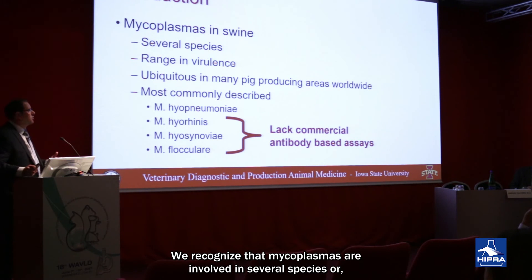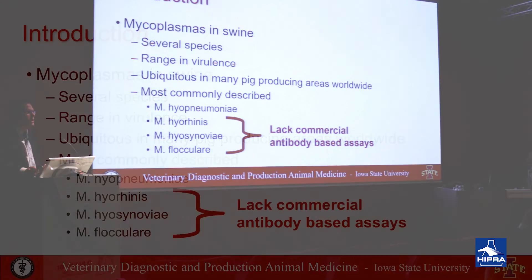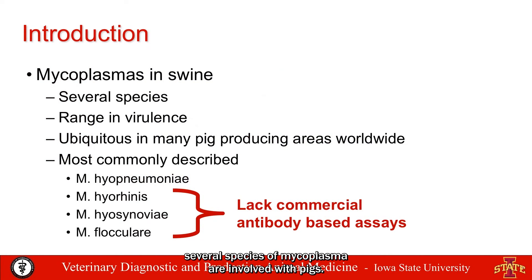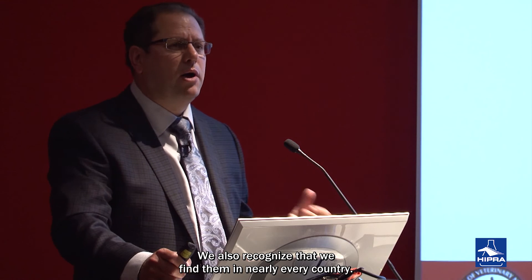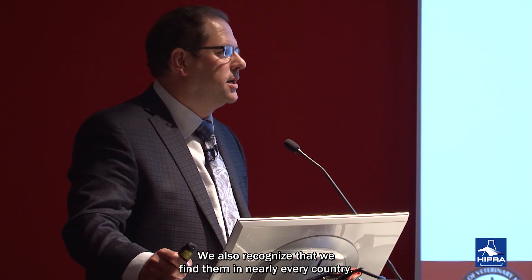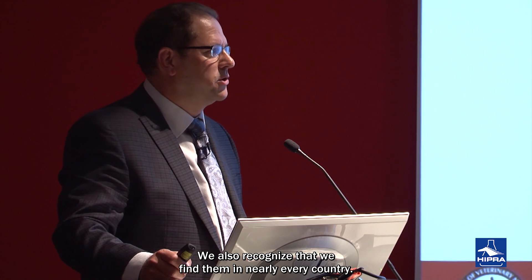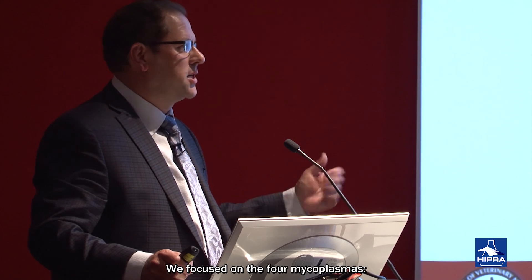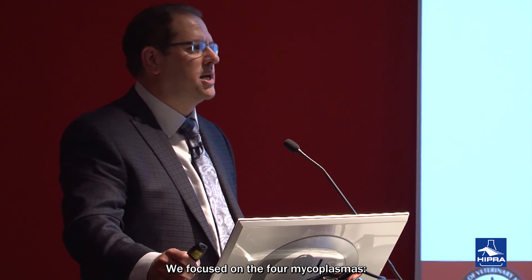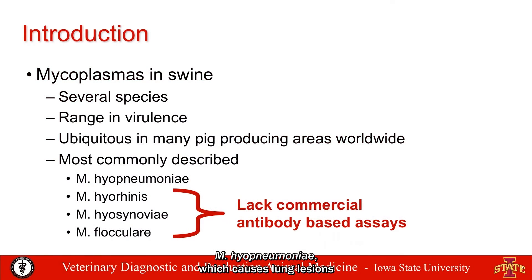We recognize that there are several species of mycoplasmas involved with pigs, and their virulence varies quite a bit. We also recognize that we find them everywhere, in just about every country. So our focus was going to be primarily on four mycoplasmas — Mycoplasma hyopneumoniae, which we know causes lung lesions and is of great importance in the production phase.